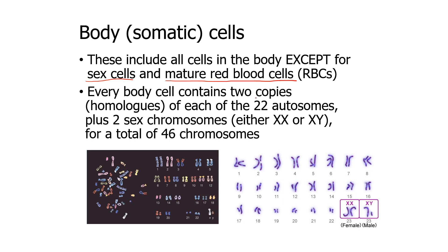Every body cell has two copies — homologous — of each of the 22 autosomes. So 2 times 22 makes 44, plus a pair of sex chromosomes, either XX or XY. So 44 plus 2 gives us a total of 46 chromosomes in a genetically normal individual. There are conditions, like Down syndrome, where instead of two copies of chromosome 21 you have three copies, giving you 47 chromosomes. Also, the pair of sex chromosomes determines biologically whether you are male or female: XX means female, XY means biologically male.